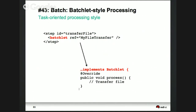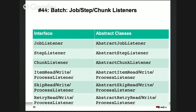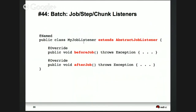The secondary processing style in batch is a batchlet — for ad-hoc one-time jobs like uploading a file or sending an email. You can define listeners at all different levels: job, step, chunk, reader, processor, and writer. Before and after each, you can define listeners to initialize resources, do logging, or clean up resources. For each listener there is an interface and a corresponding abstract class. For example, a JobListener extends the abstract class with beforeJob and afterJob methods.